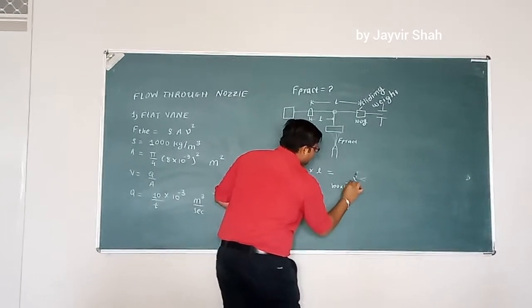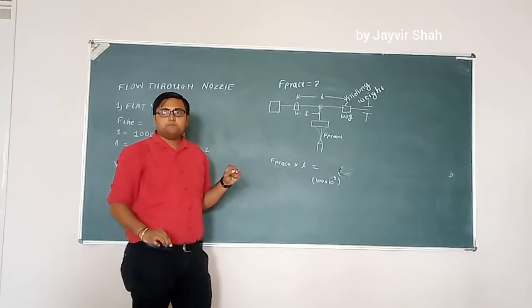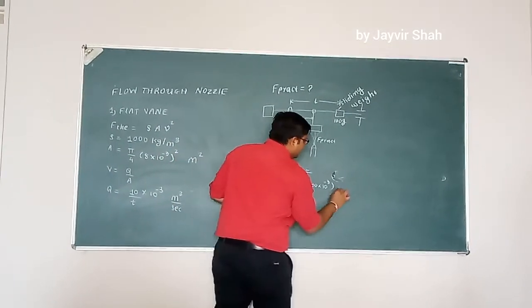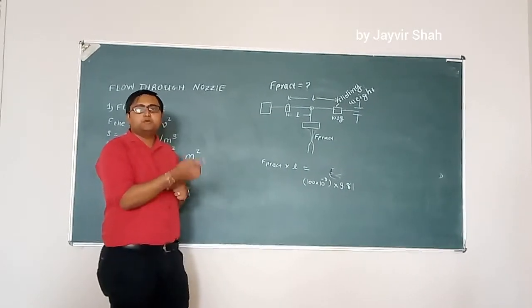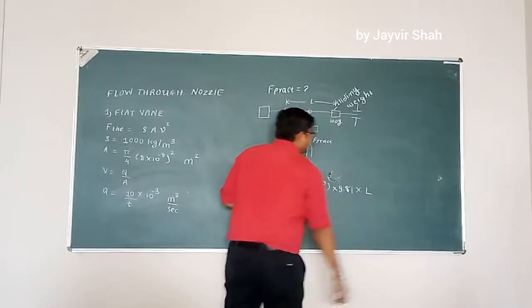Multiplied by 9.81 in order to transfer kilogram into Newton, multiplied by capital L. Is it clear? Any doubt?